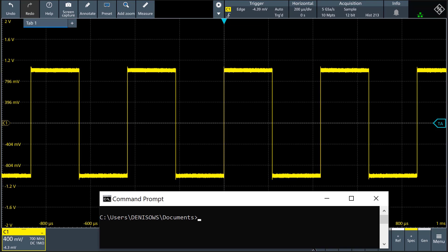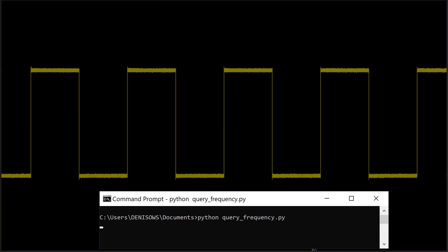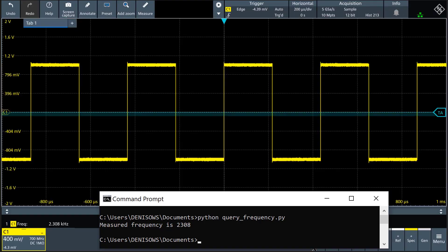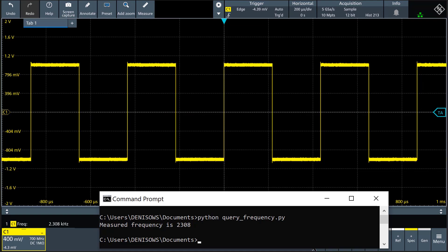Here's what this looks like on the scope. We run our script, which uses write() to tell the scope to measure frequency on channel 1, and then uses query() to query and retrieve the current frequency, which our program then prints out on the screen.